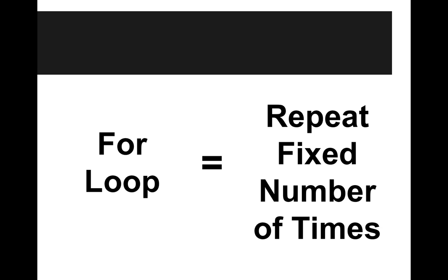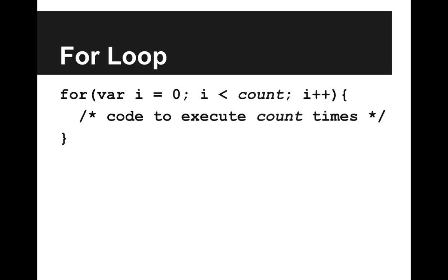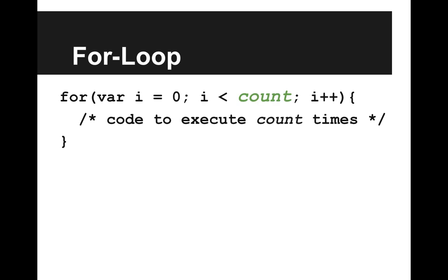The for loop lets Carol repeat a section of code a fixed number of times. A for loop means repeat a fixed number of times. So what does a for loop look like? Well, there's a lot of syntax, but there's only one important part for you to focus on — that count variable. What we're saying is repeat the code between the curly braces count number of times.